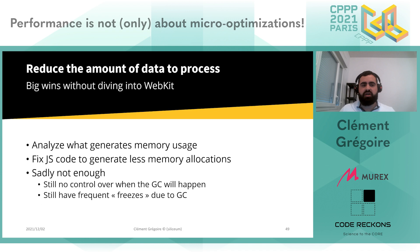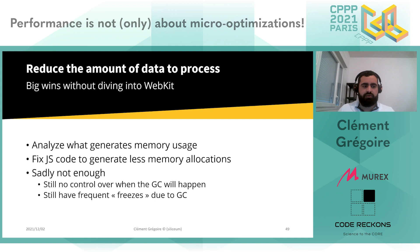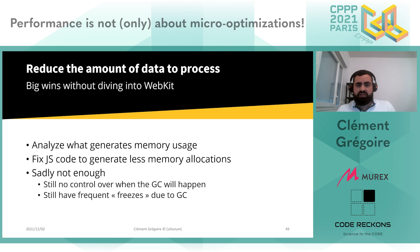Reducing data is relatively easy to spot — you just log the memory usage. At the same time, you can spot other performance problems related to your JavaScript code. So we optimized memory allocations while also optimizing the JavaScript code. Sadly, that was not enough. Even though we had about a 30% increase in speed, as I mentioned, you don't control when garbage collection will happen — it kind of happens whenever it wants. So we still had some freezes due to it.